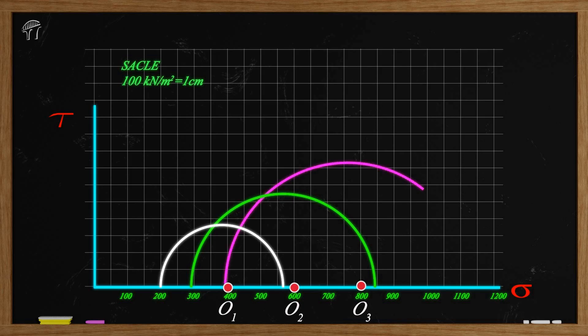In this video tutorial we will see how to use Mohr circle to determine the total shear stress parameter C and phi. For this we will take the help of a numerical on triaxial test.